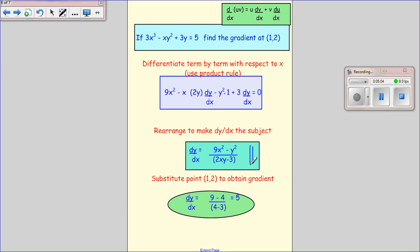Hopefully you can do that on your own. You can pause and just sort of scribble it down and make sure I've got the right answer or you've got the right answer. And then we just substitute our x equals 1 and our y equals 2 into this. And it gives us the gradient.